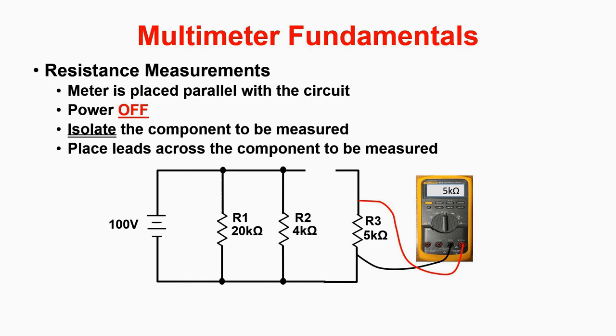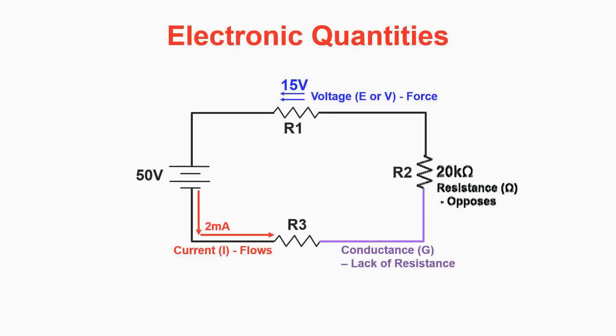This brings us to electronic quantities. There are four of them: voltage, current, resistance, and conductance. In course one, we are going to spend most of our time on the first three.